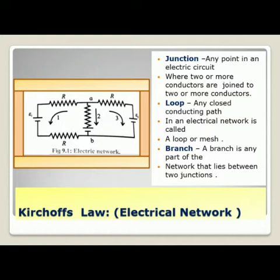A branch is any part of the network that lies between two junctions. The two junctions are labeled as A and B in the diagram. There are three branches — possible paths 1, 2 and 3 — which you can clearly see in the diagram on the left-hand side showing the electric network.